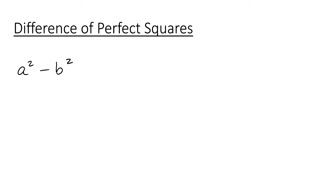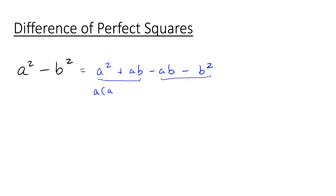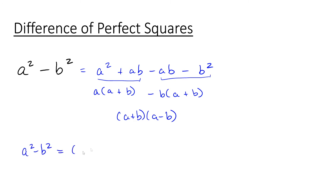The first special case for factoring we'll talk about is difference of perfect squares. If we have a squared minus b squared and we want to factor this, we can express this as a squared plus ab minus ab minus b squared. Notice positive ab and negative ab cancel out and give us zero, so this is still equal to the same thing. But here we see we can factor this by grouping. We have a common factor of a over here and a common factor of b over here. So over here we factored out negative a, that's why we have an a plus b here. Then we factor again and we end up with a plus b times a minus b.